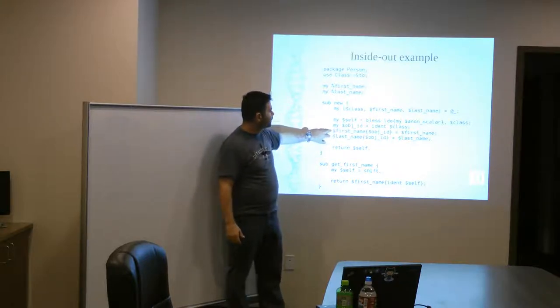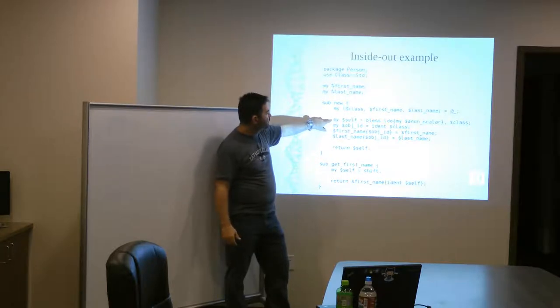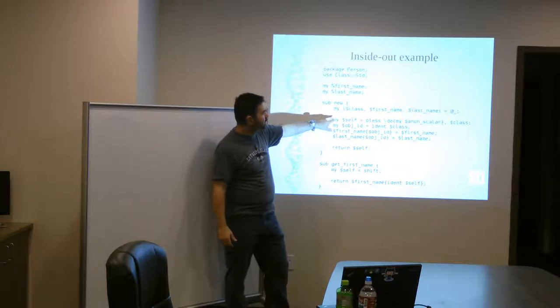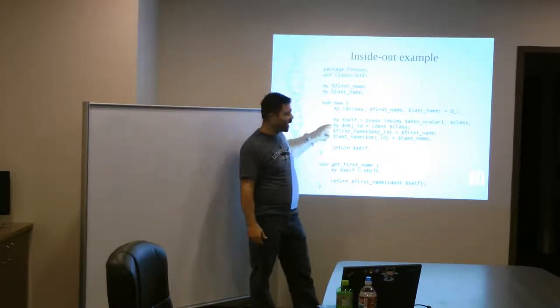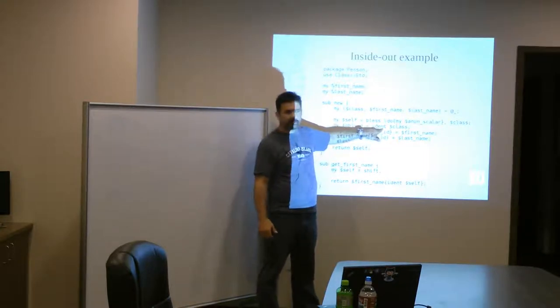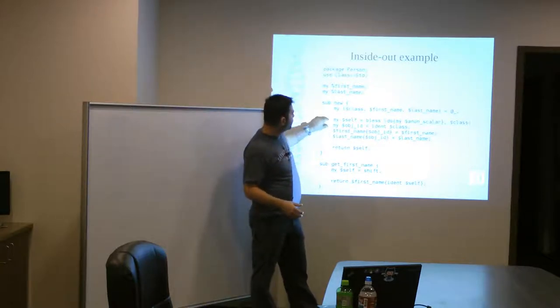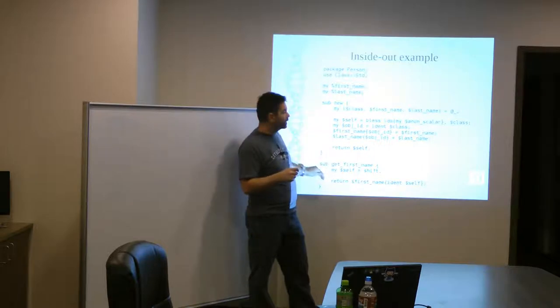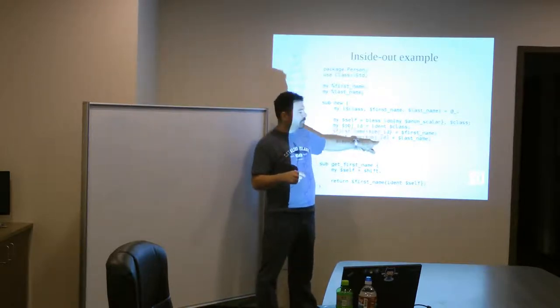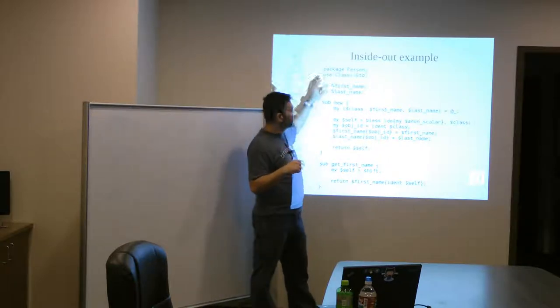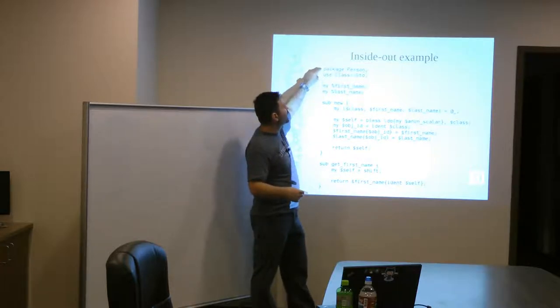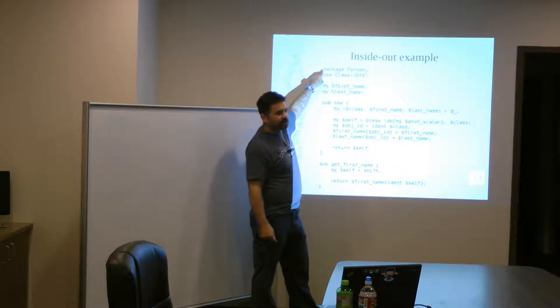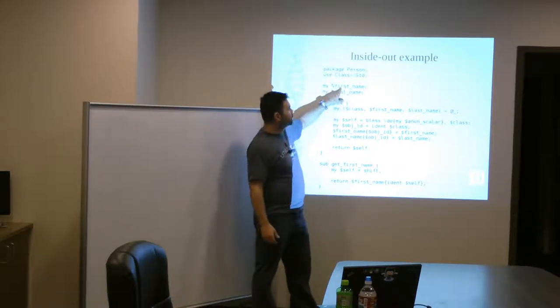So, the self is just a hash with a number in it. And then, the object ID that's used inside the package is created by this IDENT. It creates a unique ID, a unique number for the class. And so, these variables that are scoped only within this package are, and they're hashes that are keyed by that unique ID. And what that allows you to do is, even though you might, you might be able to use, you might use this, this particular package multiple times in a program, but each time that you instantiate a new instance of this person package as an object, it's going to get a unique ID in each of these hashes.